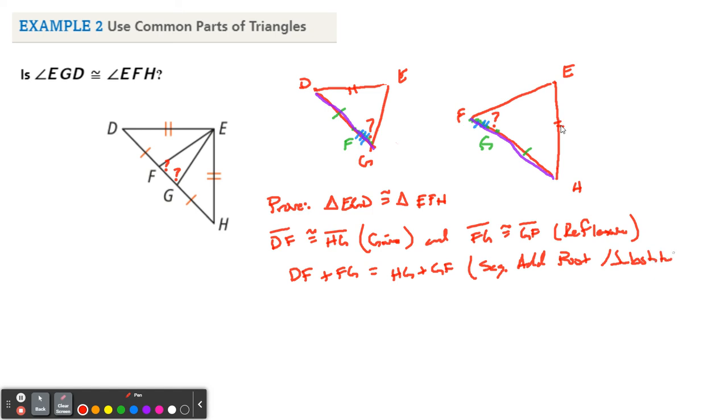And what does DF plus FG make? Well that just makes DG. So we now know that segment DG is going to be congruent to, and what does HG plus GF make? That makes HF. Okay, and again, I'm going to put a big, that's this whole thing. This whole thing is segment addition and substitution. And that got us one pair of sides. So this pair of sides is congruent all the way across.